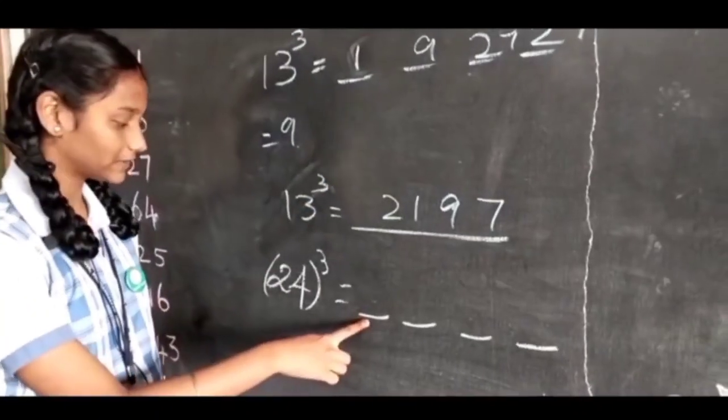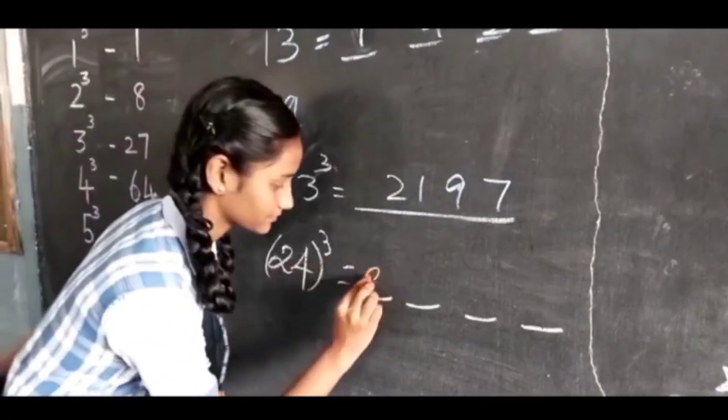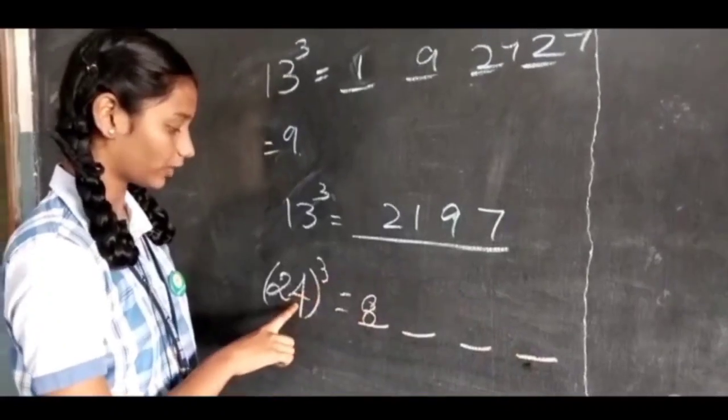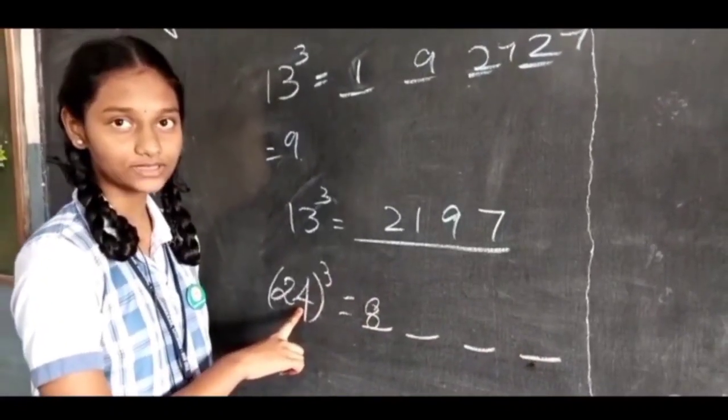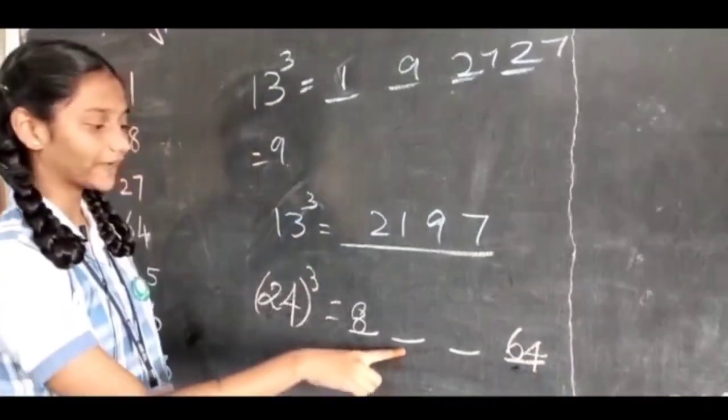To find the first part, we must know the cube of 2 - the cube of 2 is 8. To find the last term, we must know the cube of 4 - the cube of 4 is 64.